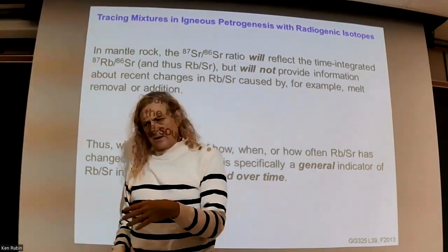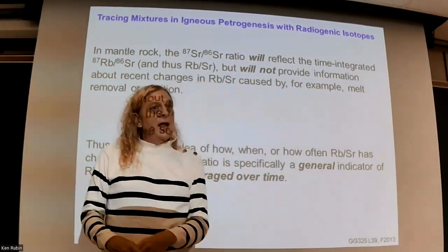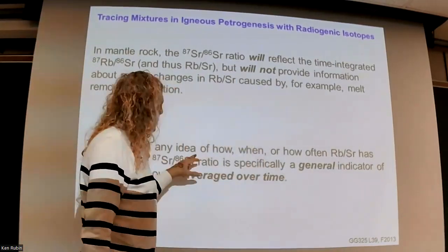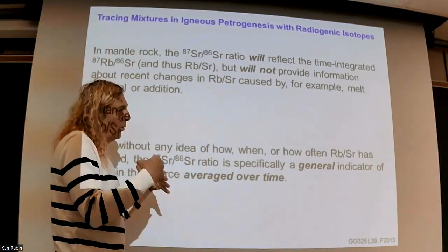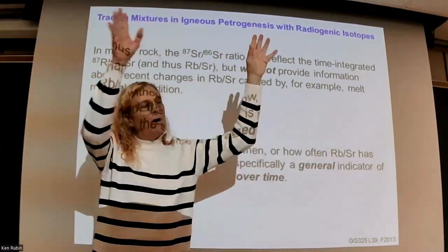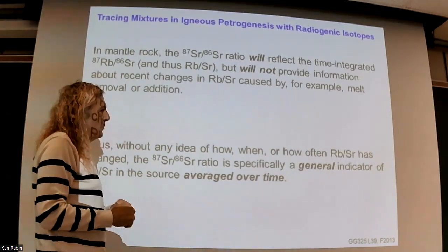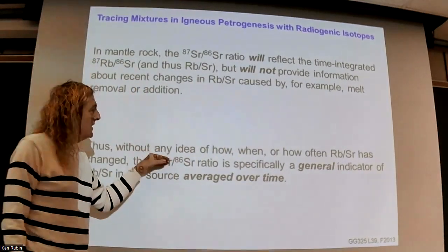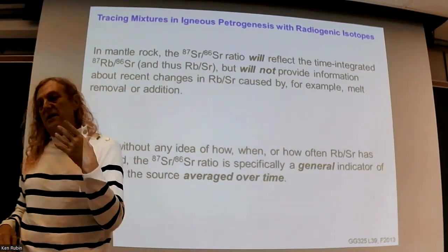We use variations in this ratio qualitatively to say something has had a high or low Rb/Sr ratio for a long time. But we can't really tell when, just from one isotope ratio pair. We know there have been changes in the rubidium-strontium ratio of the source, but you might ask when and how. One of the things we can do is compare this ratio to another and look at whether there is more variation in one ratio than another across a suite of rocks, like from Mauna Loa.